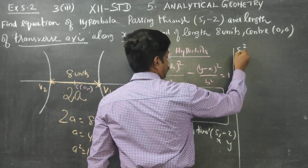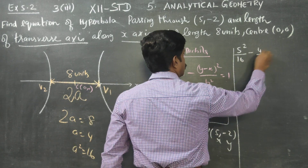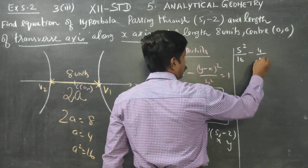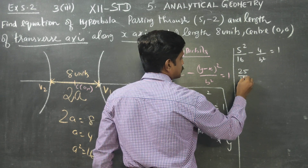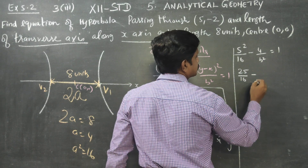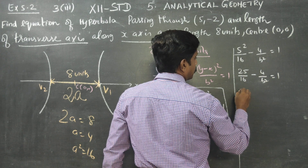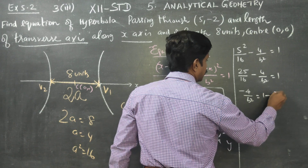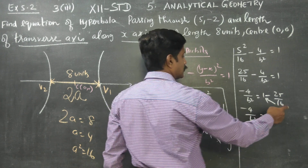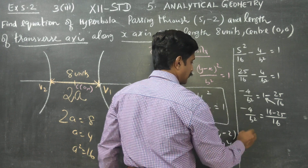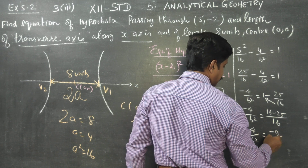Substituting: 5²/16 minus (-2)²/b² equals 1, which gives 25/16 minus 4/b² equals 1. Rearranging: 4/b² equals 1 minus 25/16, which equals (16 - 25)/16, so 4/b² equals -9/16.